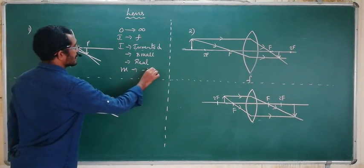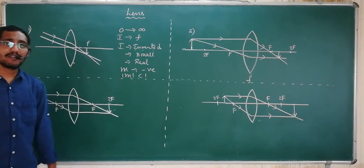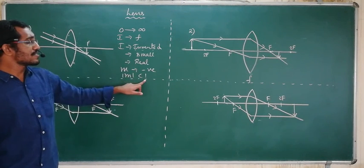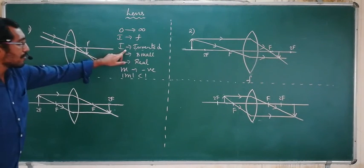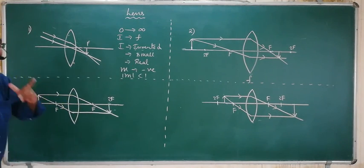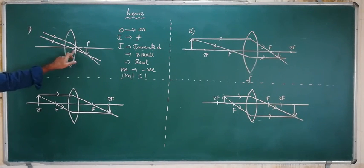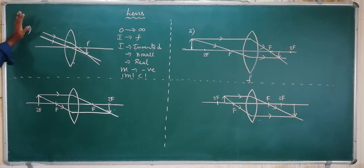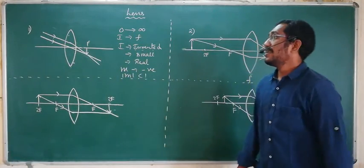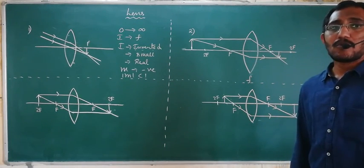For the first case, M is negative and modulus of M is less than one. One light ray passes through the optical center and is undeviated; another passes through the lens and deviates from its original direction. Both meet at the focal point forming the final image. So when the object is at infinity, the image forms at the principal focus — it is inverted, small, real, and M is negative with |M| less than one.